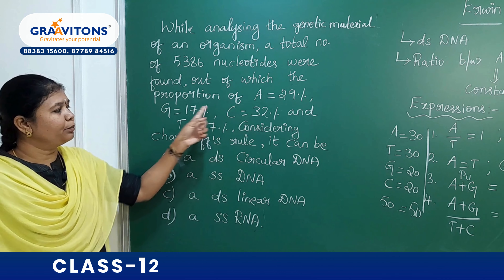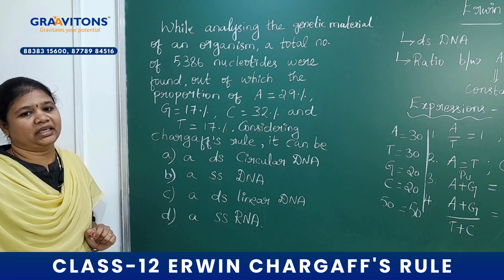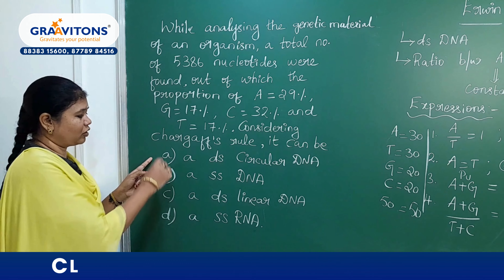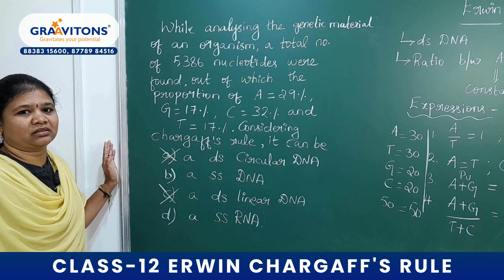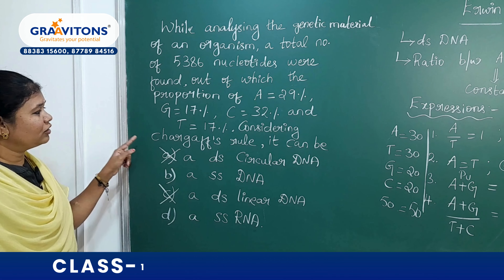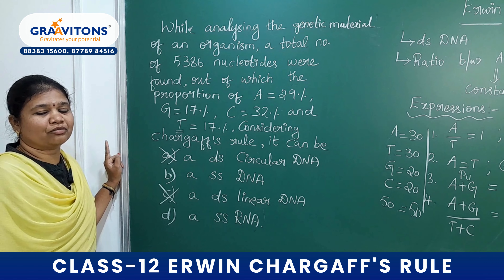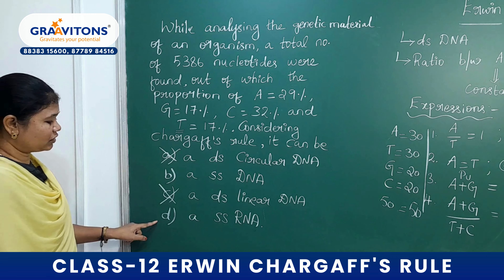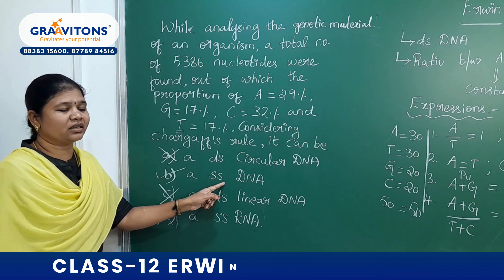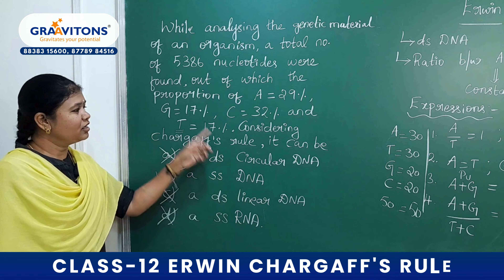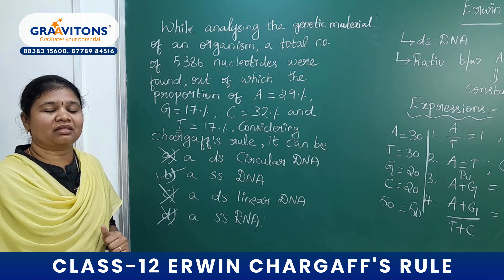Since the base proportions are not equal, it can never be a double-stranded DNA. So both options A and C are eliminated. Note that thymine is present only in DNA, not in RNA, so the single-stranded RNA option is also eliminated. Therefore, the answer is single-stranded DNA. This is how we approach different questions based on Chargaff's rules. Thank you.